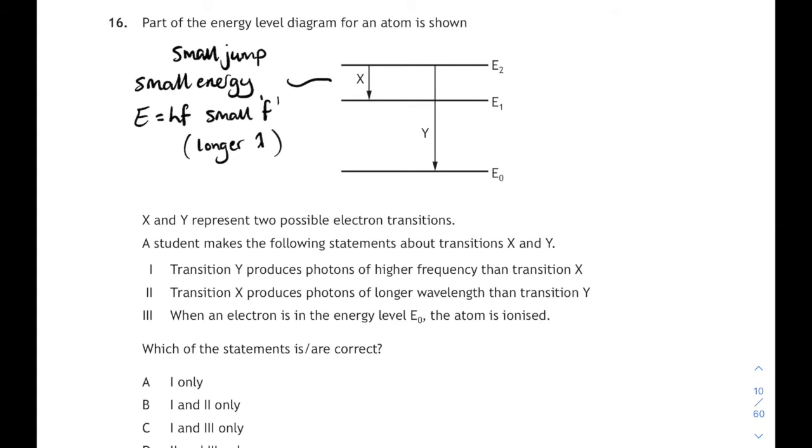Transition Y produces photons of a higher frequency. So that's a bigger jump, more energy, higher frequency. That's correct. Statement 1 is correct. That's true. Statement 2, transition X produces photons with a longer wavelength than transition Y. I've already written that on there. Yes, so that's right. Smaller jump is a longer wavelength. That's true.